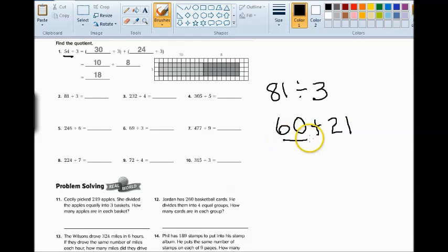Both of those numbers, I know how to divide those by 3. So what do I do? I do 60 divided by 3, which you can write it out as 60 divided by 3, with parentheses, plus 21 divided by 3, in parentheses.